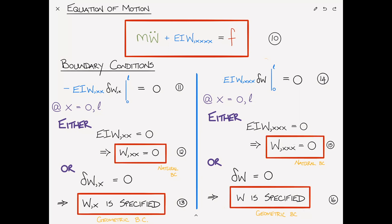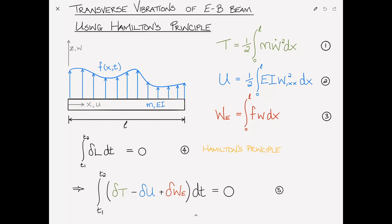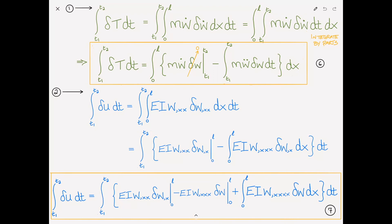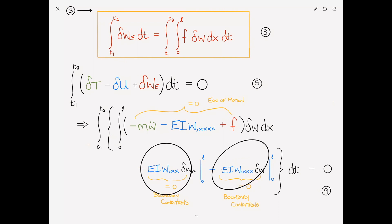Let's run through this again quickly. We used the expressions from a previous video for the kinetic and strain energy and external work, and applied Hamilton's principle by taking the variation of each. The key was to integrate by parts every time we found a variation of a derivative of W rather than W itself. The work term was straightforward — force times the virtual displacement. Plugging into Hamilton's principle, the integral terms give the equation of motion and the boundary terms give the boundary conditions.